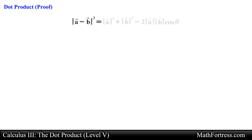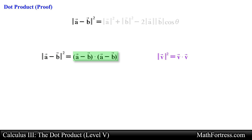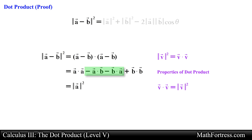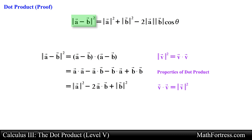Now we will finish the proof by applying a couple of algebraic properties of vectors. Let's start with the left side of the expression. Using the dot product properties we can rewrite the magnitude of vector A minus vector B squared into the quantity of vector A minus vector B dotted with itself. Then we go ahead and multiply the vectors just the way you multiply polynomials. We rewrite the first dot product as the magnitude of vector A squared, the second and third terms add to 2 times A dot B, and the fourth term becomes the magnitude of vector B squared.